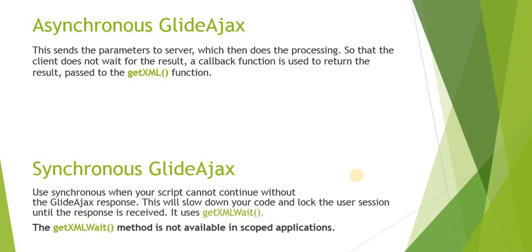Synchronous Glide Ajax is used when you really need the results at that point of time and execution of your form cannot proceed without retrieving that value from the database. For that you use getXMLWait. One thing to note: if you are building a scoped application you cannot use getXMLWait or synchronous Glide Ajax at all. Whenever this is running the user will not be able to do anything on the form — it will be in a hang state — so use synchronous Glide Ajax only when really needed.